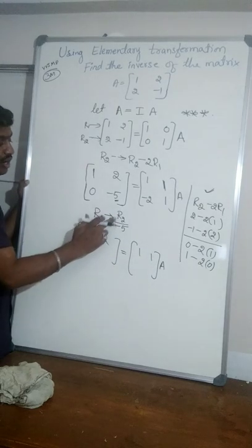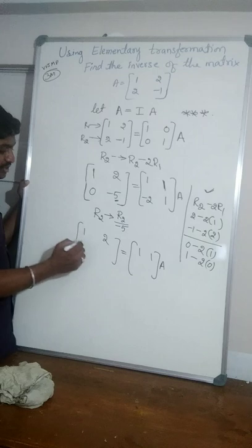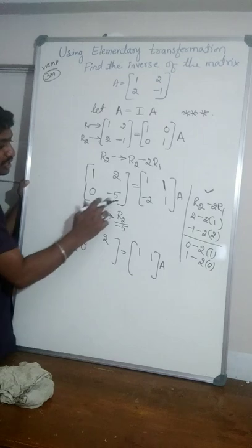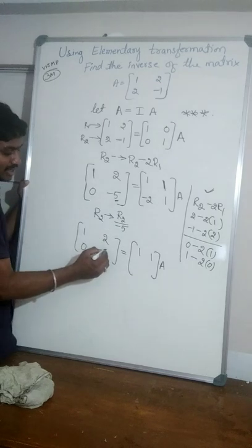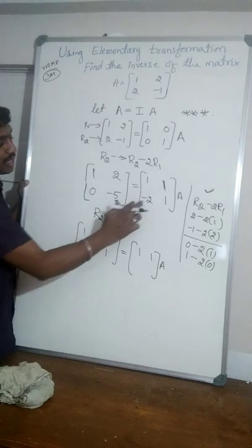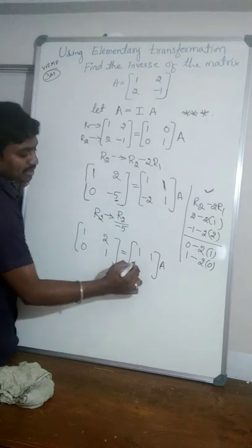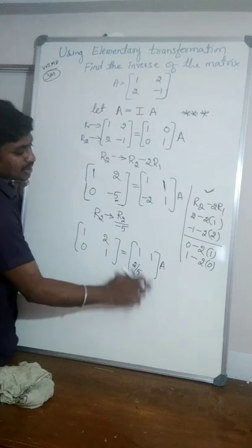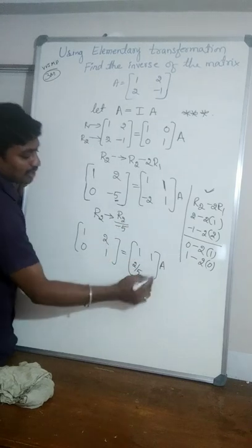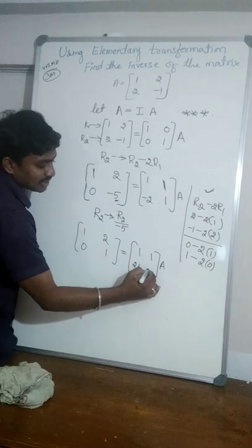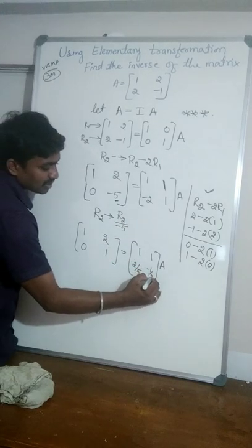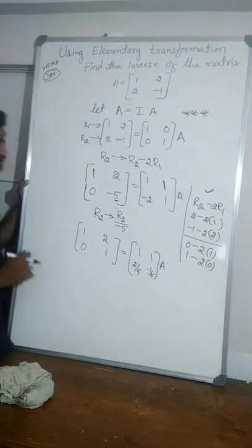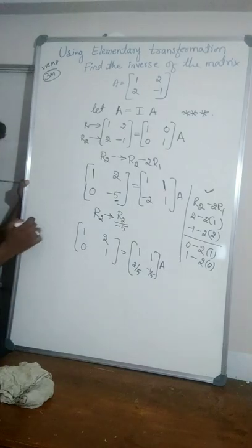Now the second row second element is minus 5 but it needs to be 1. Since minus 5 is in the second row, apply R2 tends to R2 divided by minus 5. Dividing the second row by minus 5: 0 divided by minus 5 is 0; minus 5 divided by minus 5 is 1; minus 2 divided by minus 5 is 2 by 5; and 1 divided by minus 5 is minus 1 by 5.